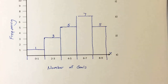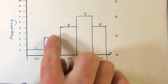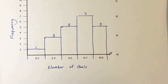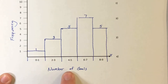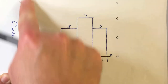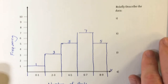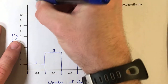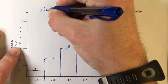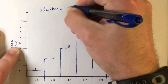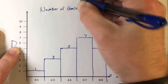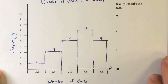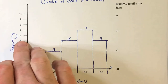Are we missing anything on this? We have our title, our numbers, our axis titles, our bars. We don't have a primary title. So what is this about? It's about the number of goals in a season for a player. So we're going to say 'number of goals in a season.' We now have all six parts of our histogram.